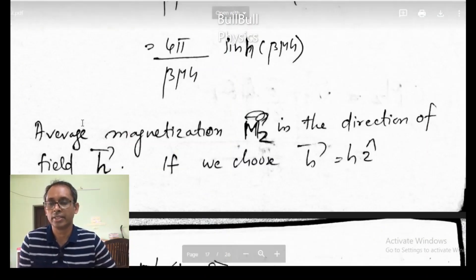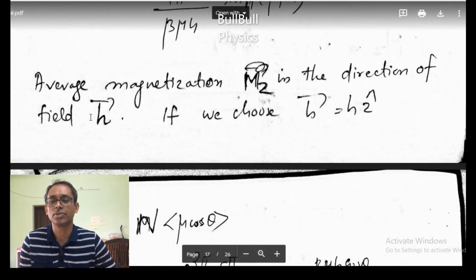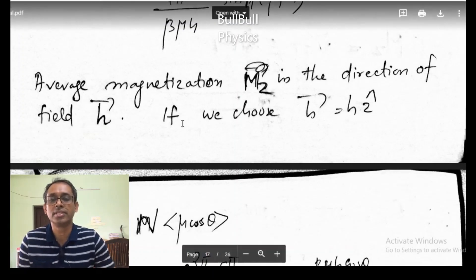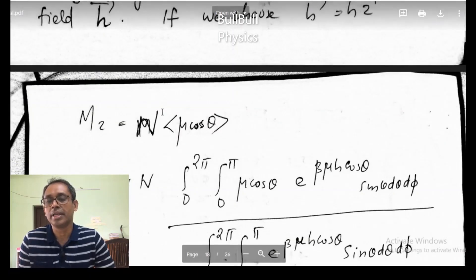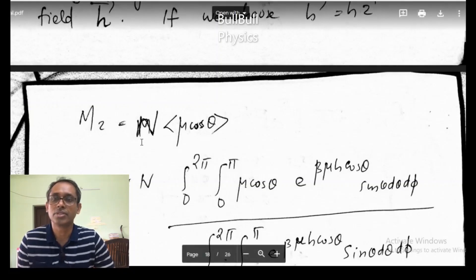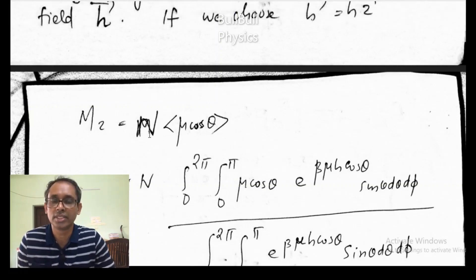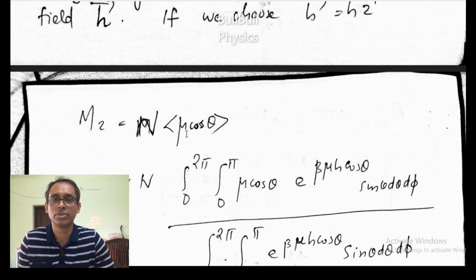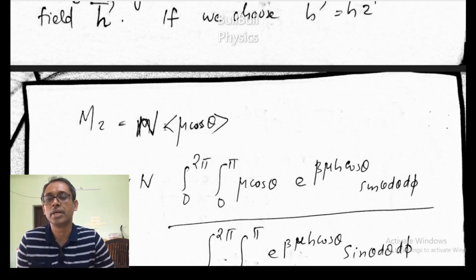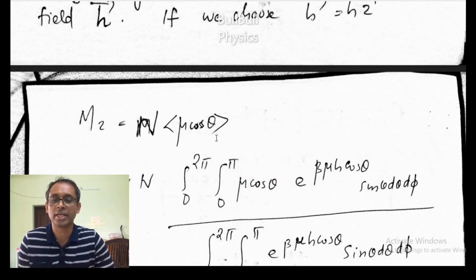Now we are going to determine the average magnetization in the direction of the field. Average magnetization M_z — because the field is in the z-direction — is given by N times the average value of mu cos theta, where N is the total number of dipoles in the system. Mu is the magnitude of the dipole moment, and theta is its orientation with respect to the field. So we are finding the average value of the z-component of the magnetic dipole moment.